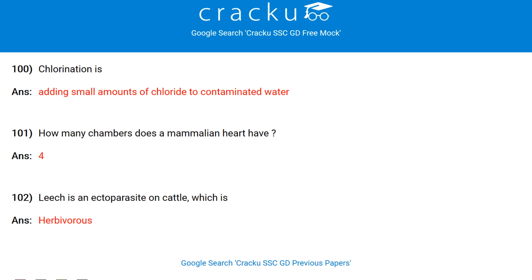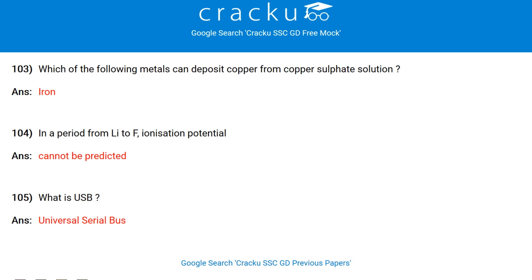Chlorination is adding small amounts of chloride to contaminated water. How many chambers does a mammalian heart have? 4. Leech is an ectoparasite on cattle which is herbivorous. Which metal can deposit copper from copper sulphate solution? Iron. In a period from Li to F, ionization potential cannot be predicted — it neither increases nor decreases.